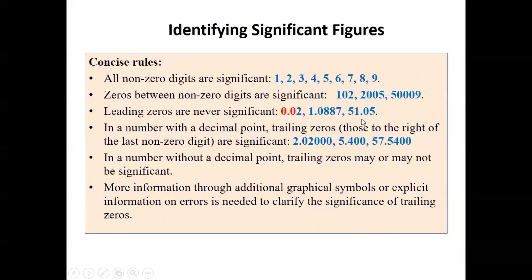Concise rules: all non-zero digits are significant. Zeros between non-zero digits are significant. Leading zeros are never significant and can be ignored. For a number with a decimal point, trailing zeros to the right of the decimal are significant. For a number without a decimal point, trailing zeros may or may not be significant, and more information through a graph or explicit error notation is needed to clarify.